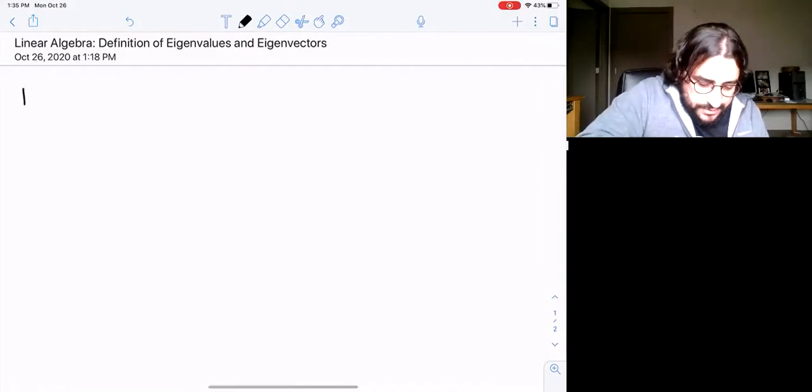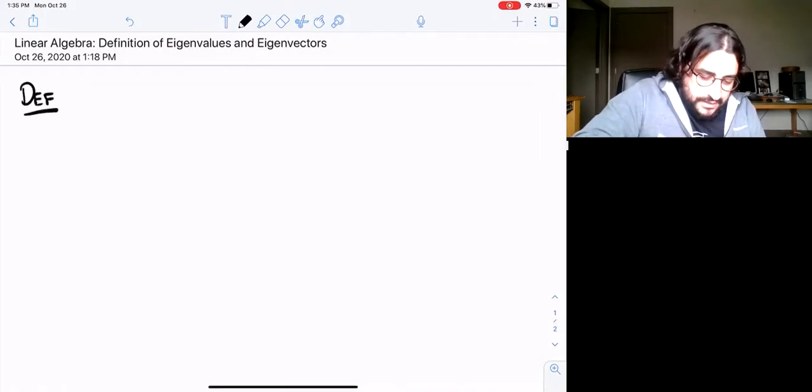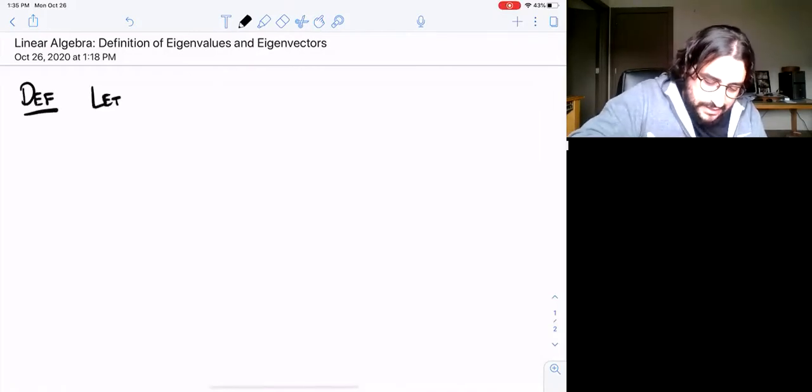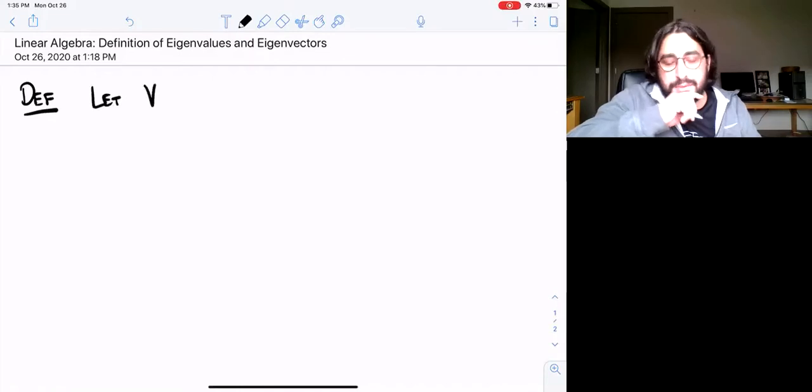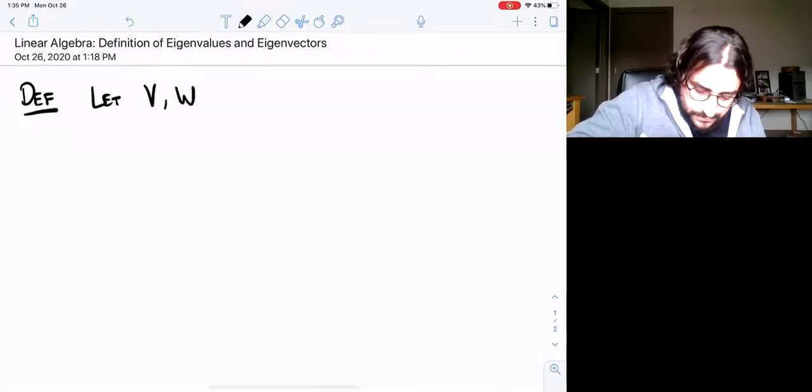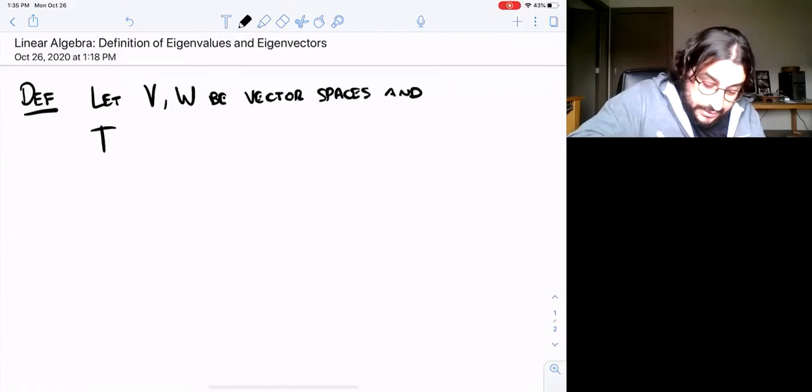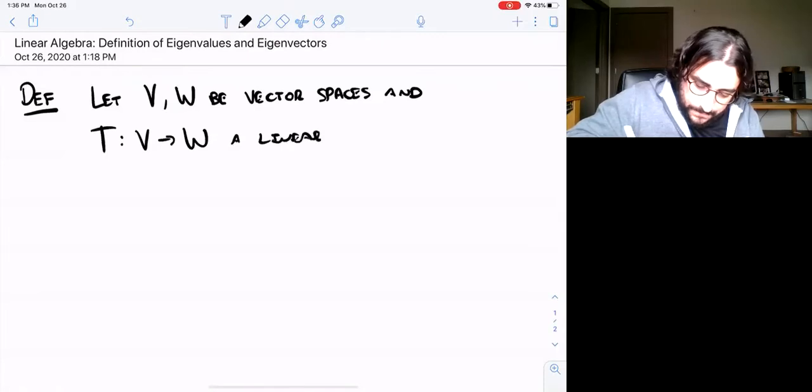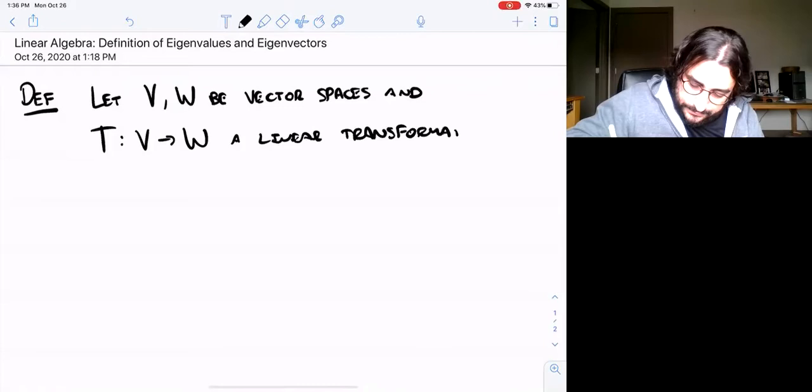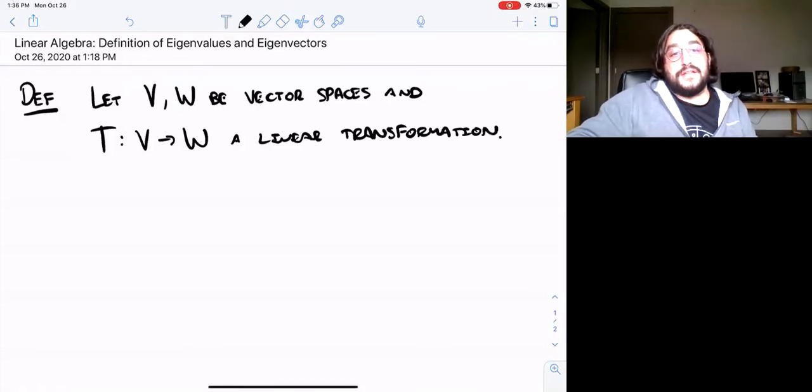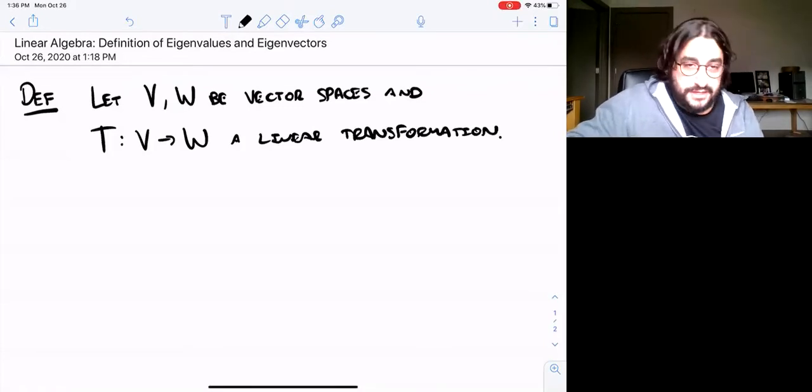So we'll start with a definition. In this case the structure that we want to start with is a pair of vector spaces and a linear transformation between them. So T is just a linear transformation with domain V and codomain W.